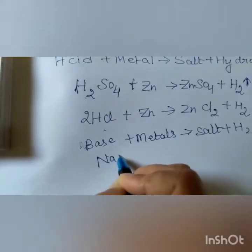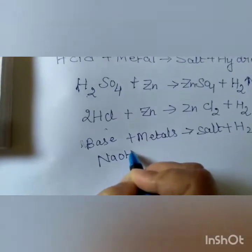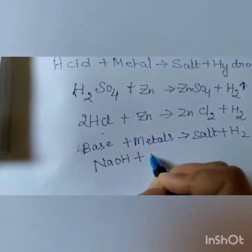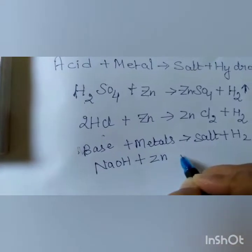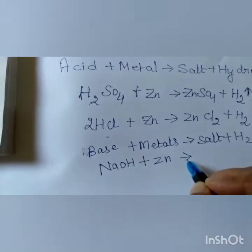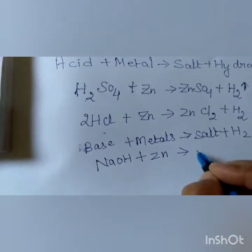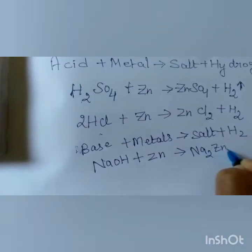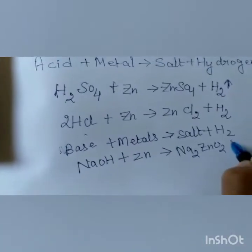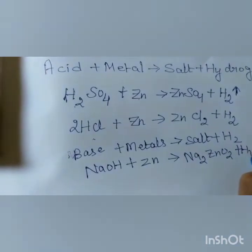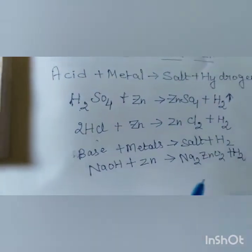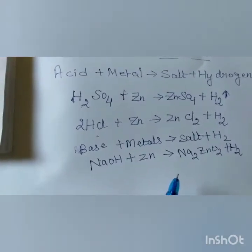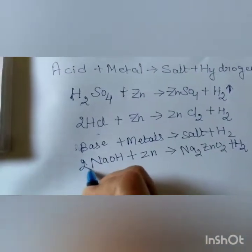Now you take a base — sodium hydroxide. Note that all bases do not react with metals. Let us take metal zinc. You will get salt which is called sodium zincate, written as Na₂ZnO₂, and the gas evolved is hydrogen. If you balance the equation you will get the balanced form.